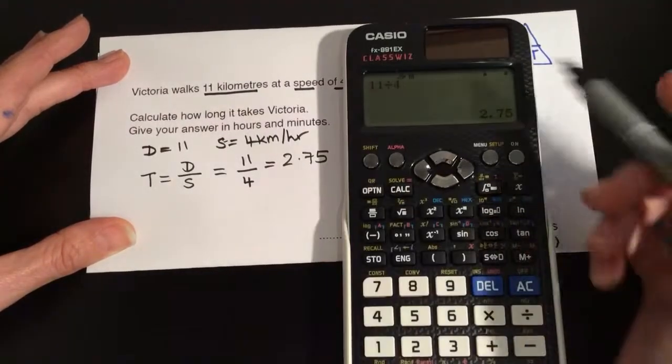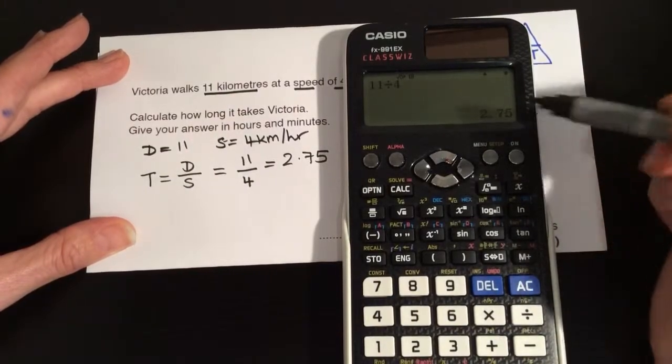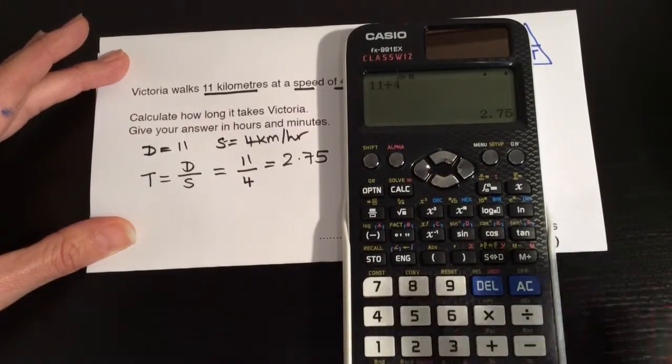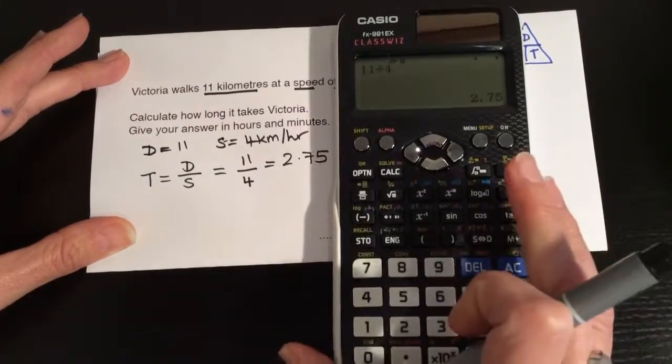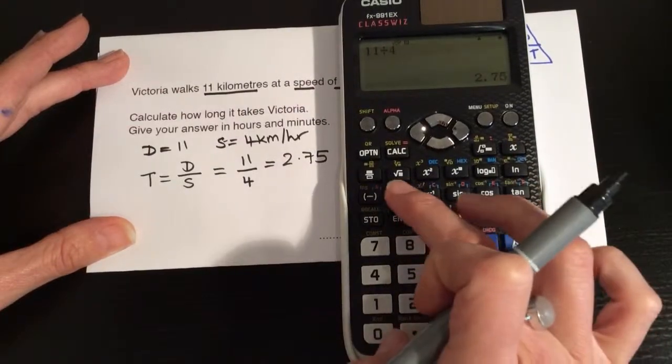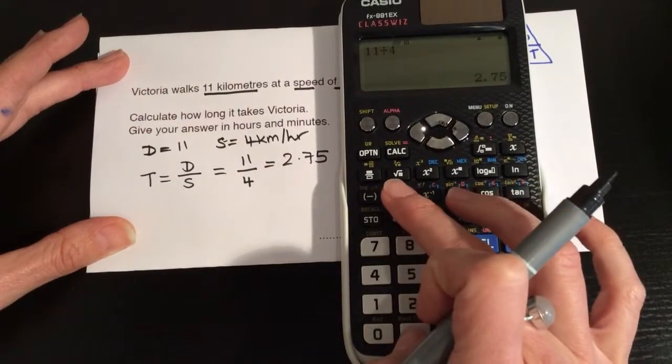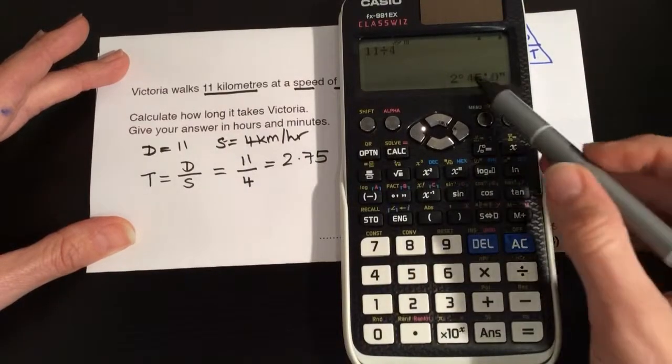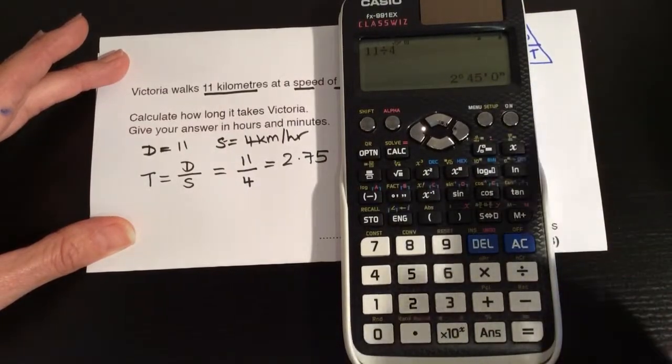So it's 2 and part of another hour. Now you can either think about it as working out 0.75 of an hour, or there's a nice clever little button here that if we press it now, it converts it for us into 2 hours and 45 minutes.